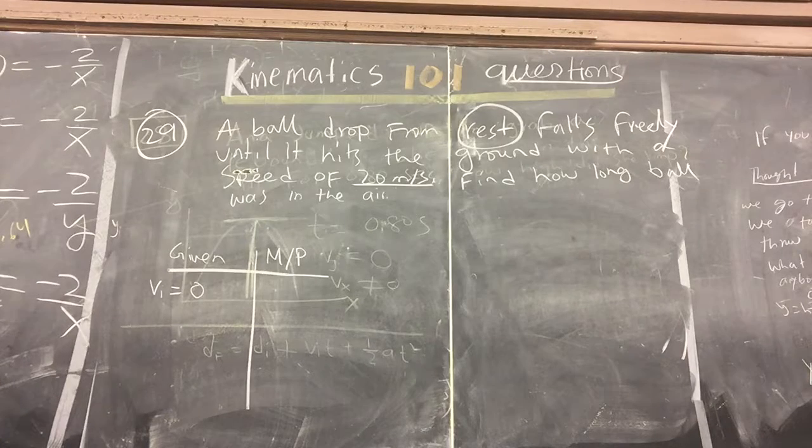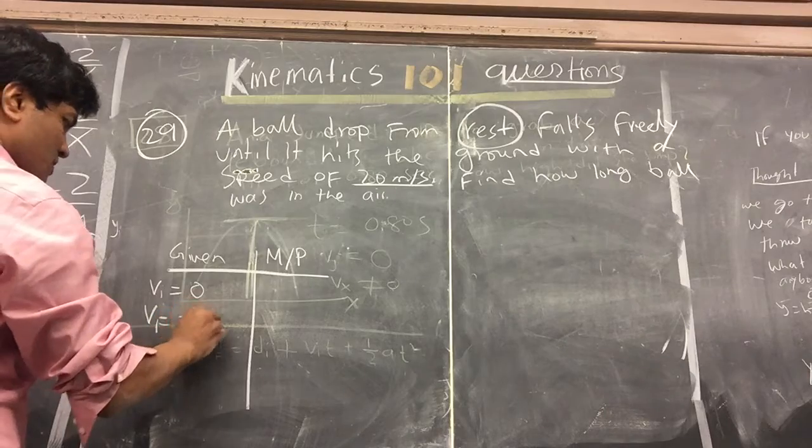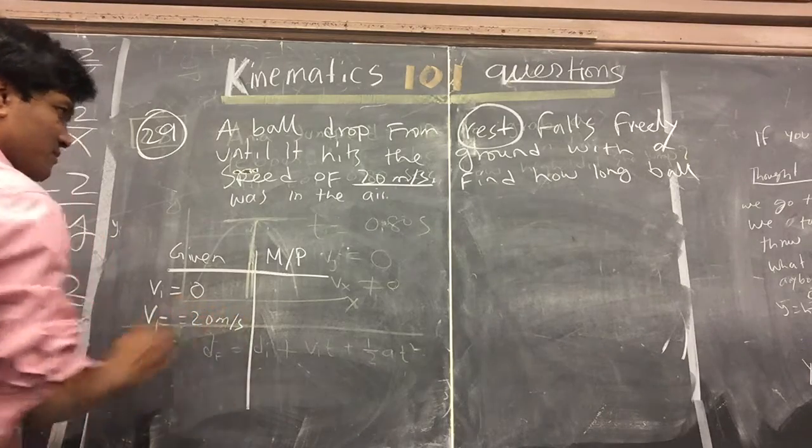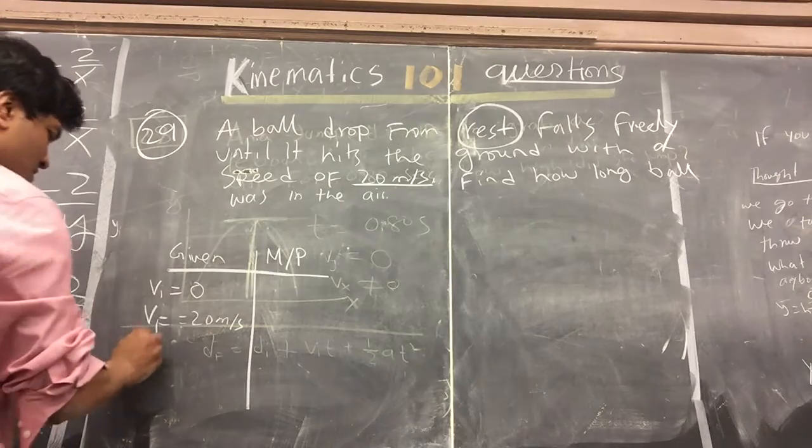And he hit the ground with his speed up. So velocity final is 20 meters per second. Find how long the ball was in the air. We have to find the t.